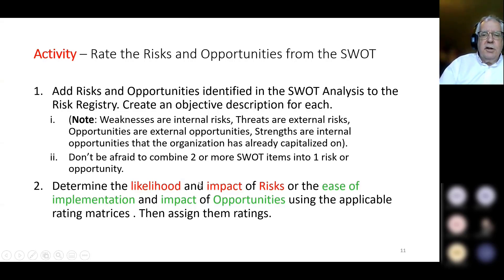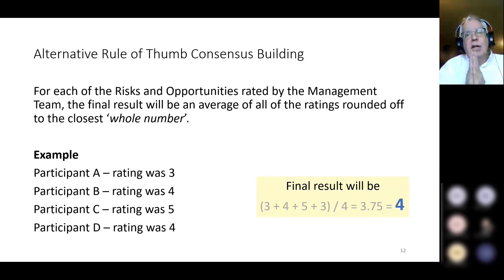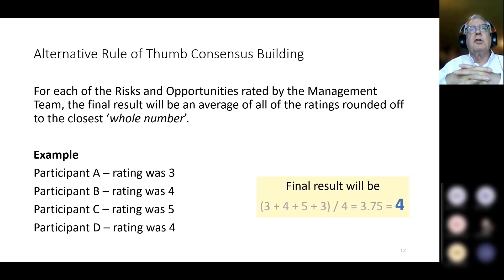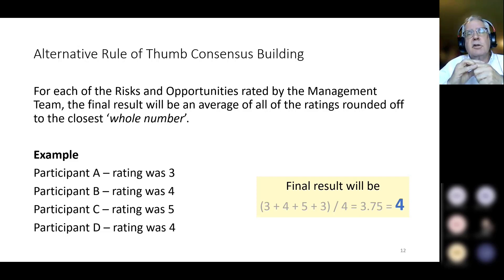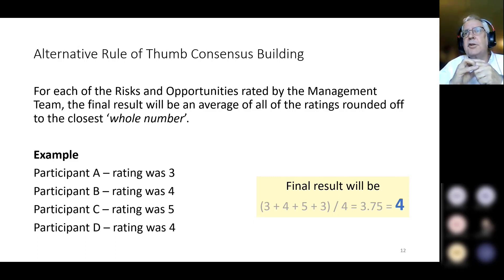You determine the likelihood and impact of risks, or the ease of implementation and impact of opportunities, using the applicable rating matrices, then assign them ratings. Imagine all those suggestions from the SWOT analysis — each one rated by the group. You've got people around the table who won't agree on everything, but they use the numbering system to rate each item. They rate them and the formula is simple: take the average and round it up or down. In this example, four people went anywhere from three to five — there might be some discussion, but then you cut it off and take the average.